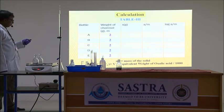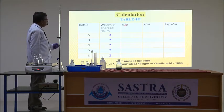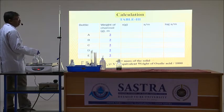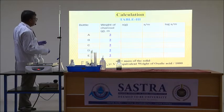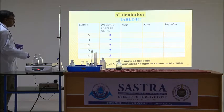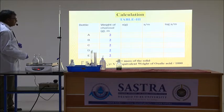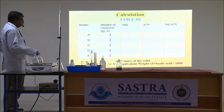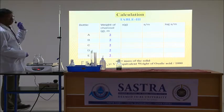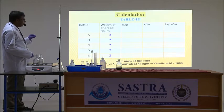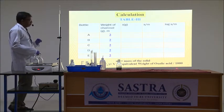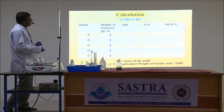Now we have to calculate the extent of adsorption, that is X/M. M is the mass of the solid — in our experiment, the mass of charcoal is 2 grams. X can be calculated by the formula: X = (C₀ − CE) × V × (equivalent weight of oxalic acid) / 1000, where C₀ is the initial concentration, CE is the equilibrium concentration, V is the total volume (100 ml), and the equivalent weight of oxalic acid is 63. We can thus calculate X/M for all bottles.